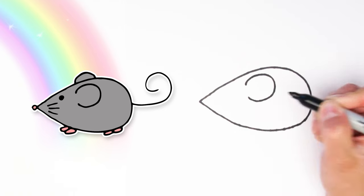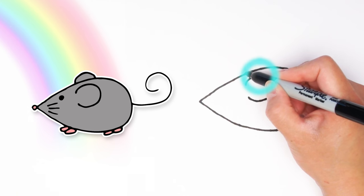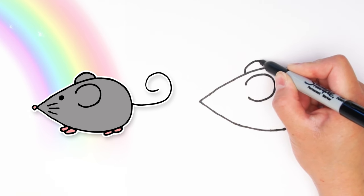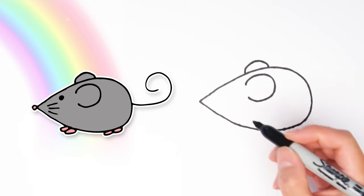Now to draw the other ear that's behind the mouse's body, we're going to imagine a circle but only draw a tiny part of it poking out on the other side. Next we're going to draw a little tiny circle for the nose, just very teeny tiny right there on the tip.